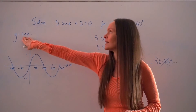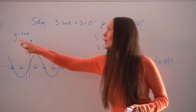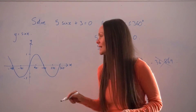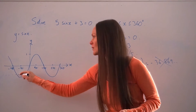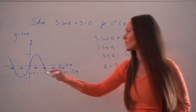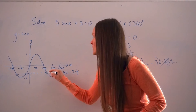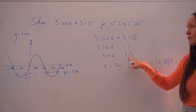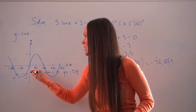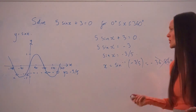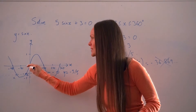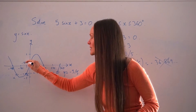This is the graph y equals sin x, and in our equation the y value has changed to negative 3 fifths. Looking at the graph, y is negative 3 fifths approximately here. I'm going to draw in the horizontal line y equals negative 3 fifths, because where that line intersects our graph gives the solutions to sin x equals negative 3 fifths. The x values of the intersection points that fall outside our range are negative — we don't want those. The value of negative 36.869 degrees corresponds to this intersection point, with an x-coordinate of approximately minus 36.9 degrees.